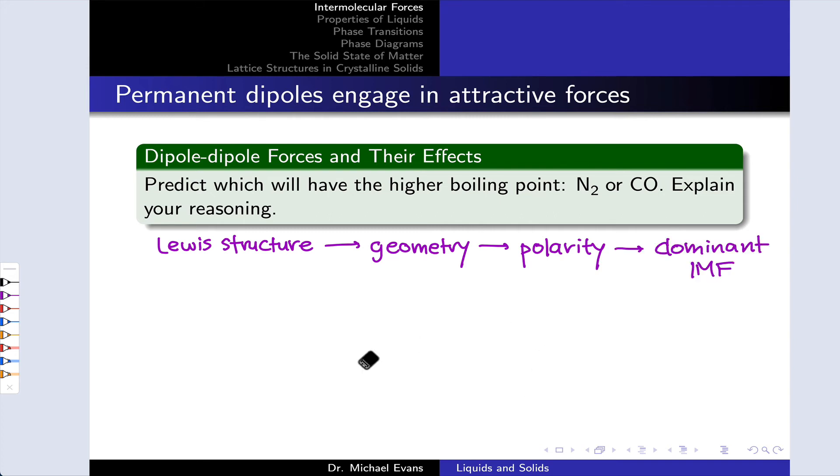Once we've assessed the polarity, we can get a sense of the dominant intermolecular force, whether it's London forces, dipole-dipole forces, or other types of forces we'll talk about a little bit later. We then apply the general ordering of strengths of intermolecular forces to figure out what are the relative strengths of forces in these compounds, and how does that relate to boiling point or melting point.